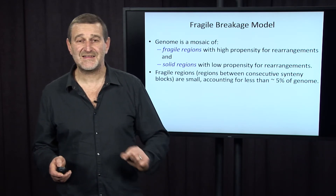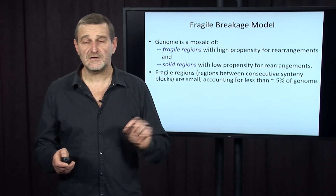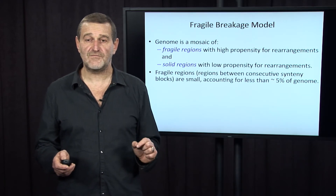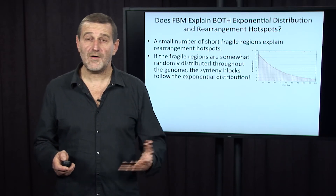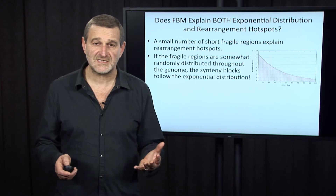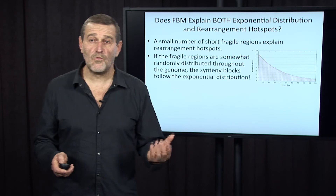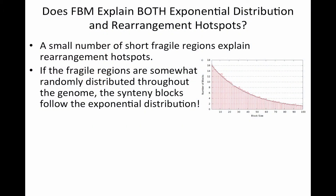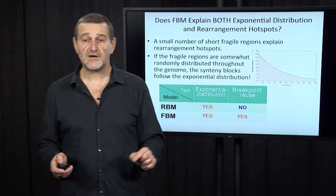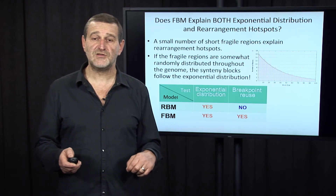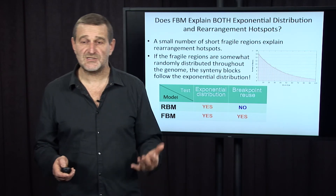According to the fragile breakage model, our genomes represent a mosaic of fragile regions with a high propensity for rearrangements, and solid regions that are hardly ever broken by rearrangements. Fragile regions — regions between consecutive synteny blocks — are short, accounting for less than 5% of our genomes in the case of the human genome. A small number of short fragile regions explain rearrangement hotspots, because there are very few regions where rearrangements can actually happen, so they are bound to be repeated in the same places. Also, if fragile regions are somewhat randomly distributed throughout the genome, then synteny block lengths follow exactly the same exponential distribution as in the random breakage model. Therefore, the fragile breakage model explains both exponential distribution and breakpoint reuse, and should be used as a substitute for the random breakage model.